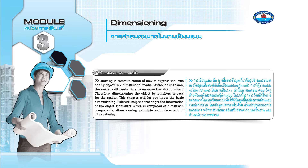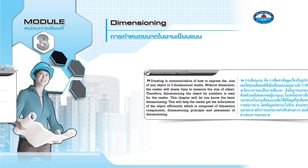This chapter will let you know the basic dimensioning. This will help the reader get information of the object efficiently, which is composed of dimension components, dimensioning principle, and placement of dimensioning.